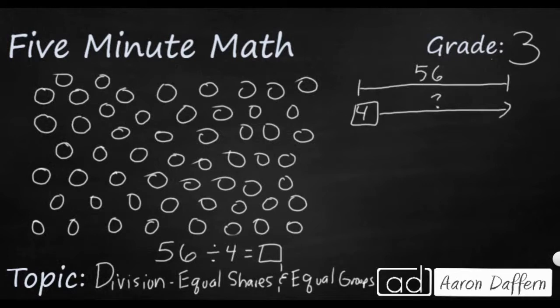If you happen to have your fours memorized up to 56, you could use a related multiplication fact to figure this out, but most of us don't know all fours past either 40 or 48. So we're going to just look at this as a division problem. So probably the easiest way to solve this would be to just make groups of four, and just keep track of those groups on a tally chart.